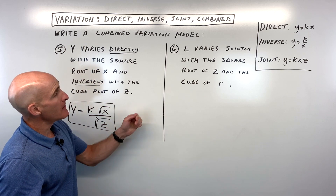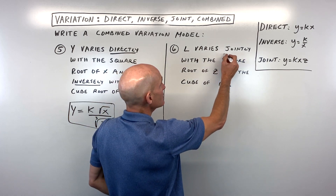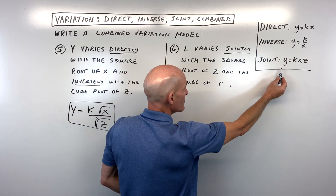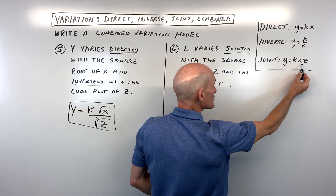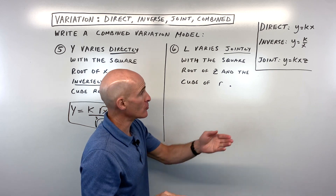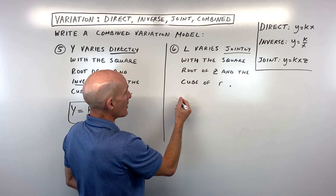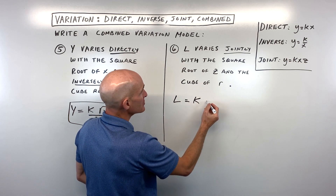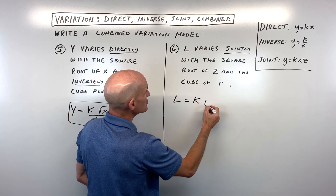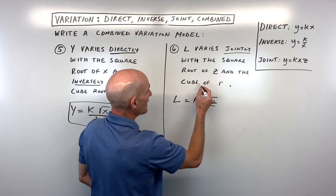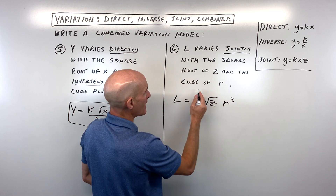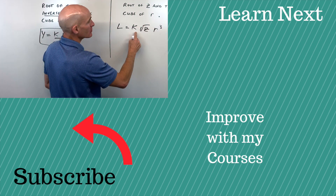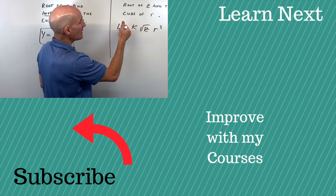For number 6, L varies jointly with the square root of z and the cube of r. Joint variation means they're all multiplied together in the numerator. Writing this out: L equals k times the square root of z times r cubed. Note it's the cube of r — meaning r to the third power — not the cube root. All terms are multiplied together in the numerator alongside the constant of variation.